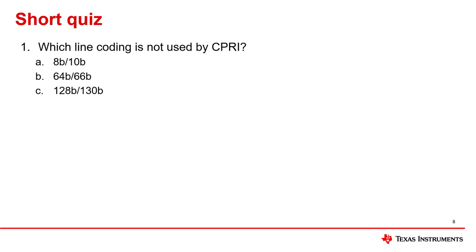Question 1: Which line coding is not used by CPRI? A. 8B-10B, B. 64B-66B, C. 128B-130B. The answer is C: 128B-130B.